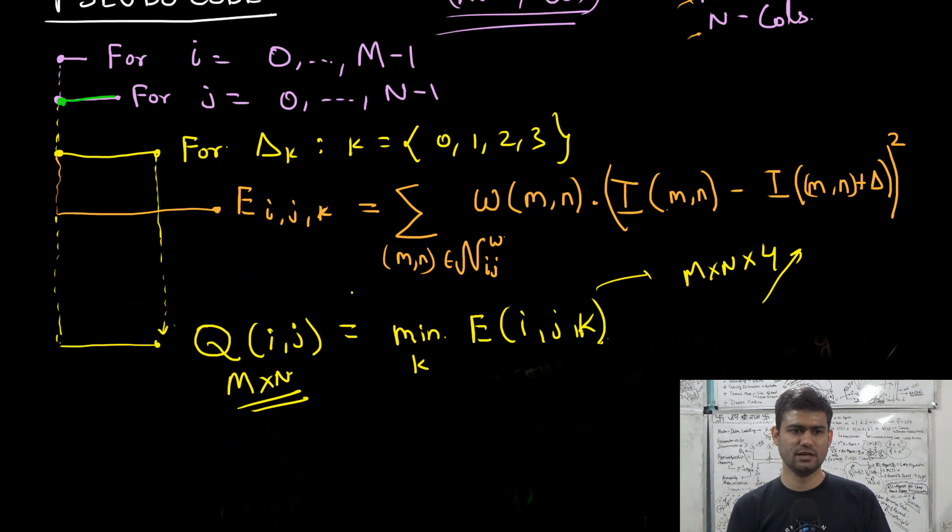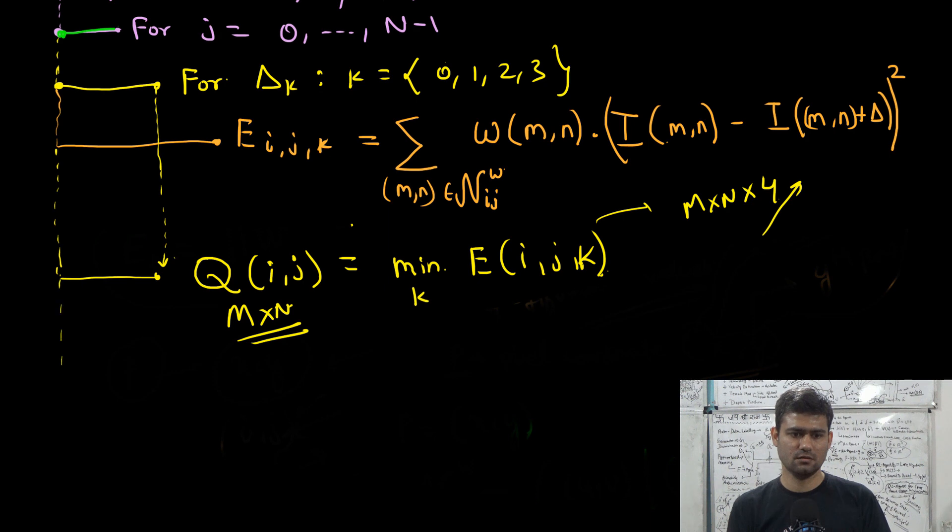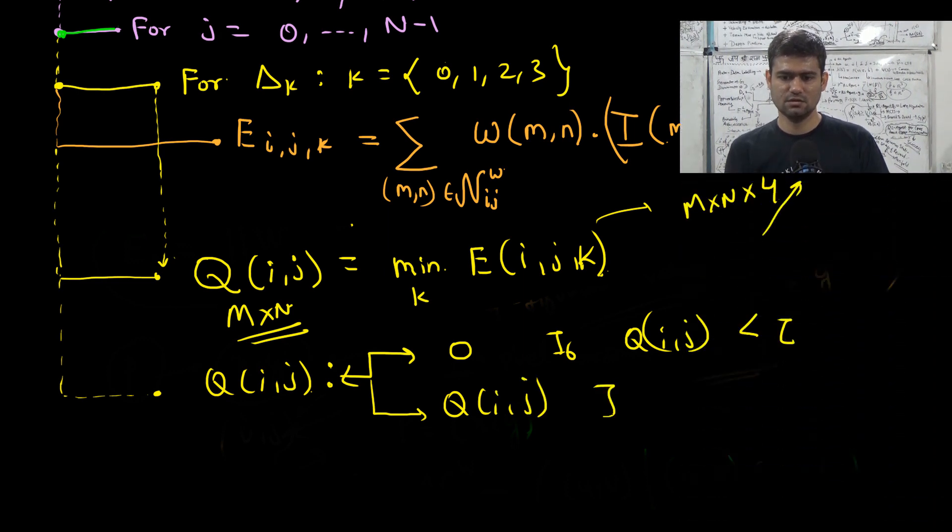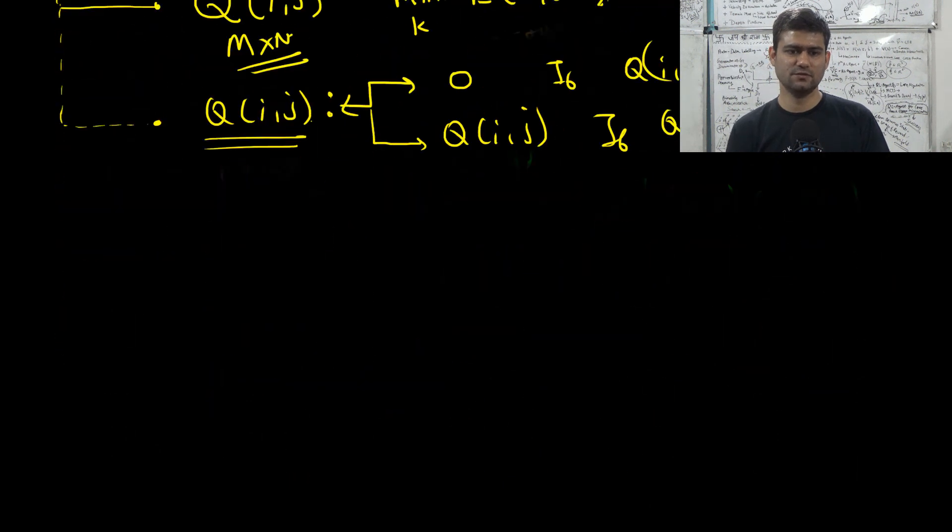So once we have computed the matrix Q, again we start two nested for loops. Then we can simply check if Q_ij is beyond some threshold. So set it to 0 if Q_ij is less than some threshold. And leave it as it is if Q_ij is greater than the human supplied threshold. So once we have computed the matrix Q in this for loop, then we just iteratively check for the last step.